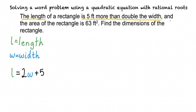Now we have this equation L equals 2W plus 5. The second part of that sentence tells us that the area of the rectangle is 63 feet squared. How does this information help us? Well, do you remember the formula for the area of a rectangle?